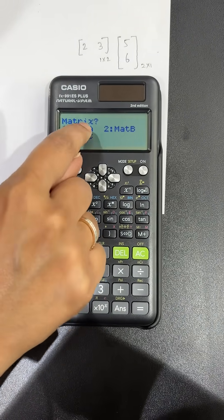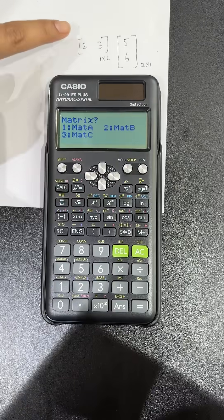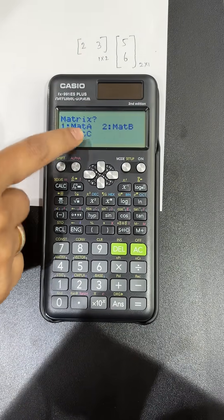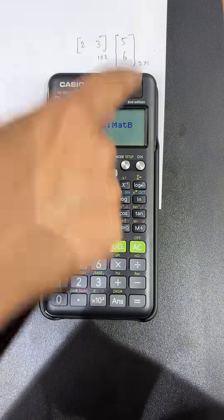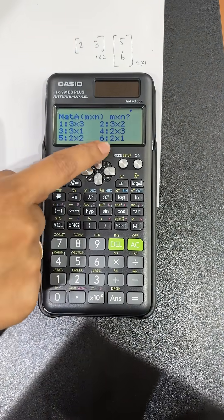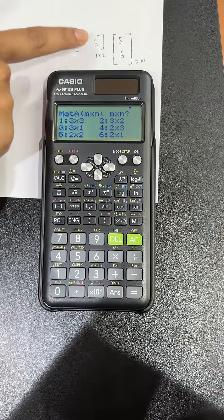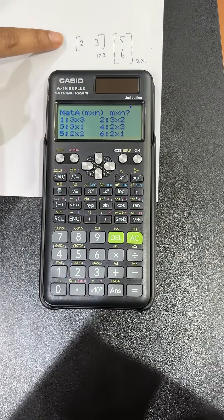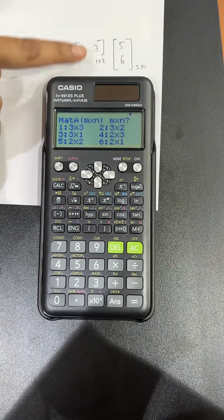We have three matrices, so we will put the value of the first matrix in matrix A and the second matrix in matrix B. Click on 1, then you have to select the dimension. This is a 1 x 2 matrix with one row and two columns.